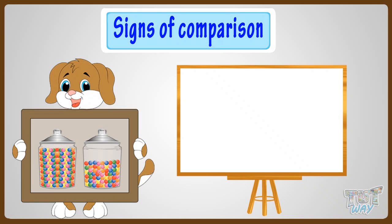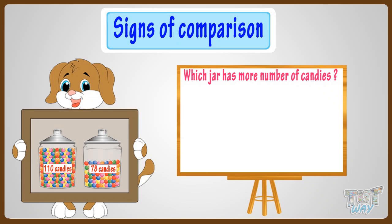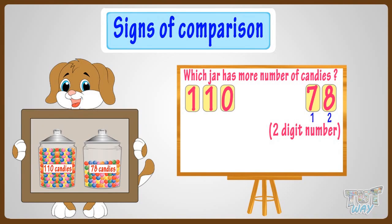One jar has seventy-eight candies and the other one has one hundred and ten candies. Which jar has more number of candies? Let me help you compare the numbers. Here, seventy-eight is a two-digit number, whereas one hundred and ten is a three-digit number. And the number with more digits is always bigger than the number with fewer digits.